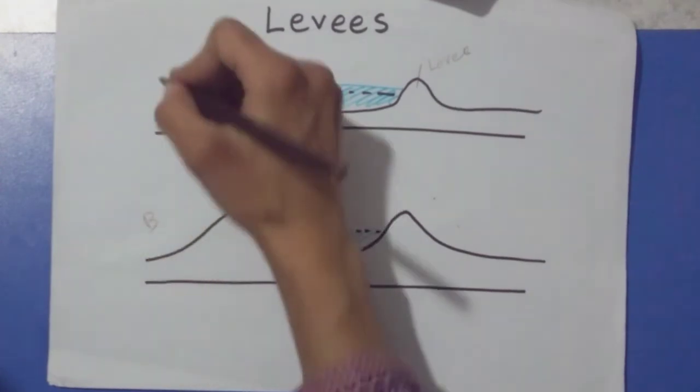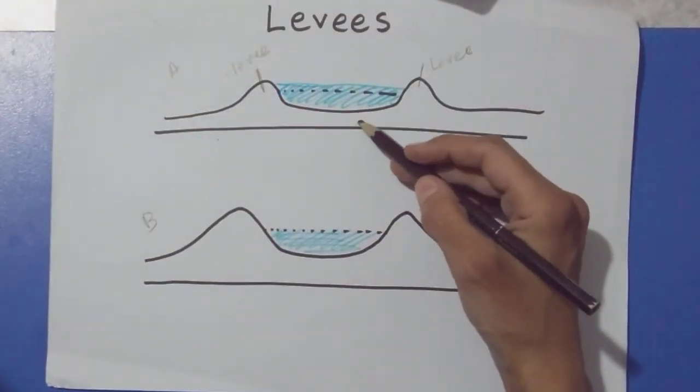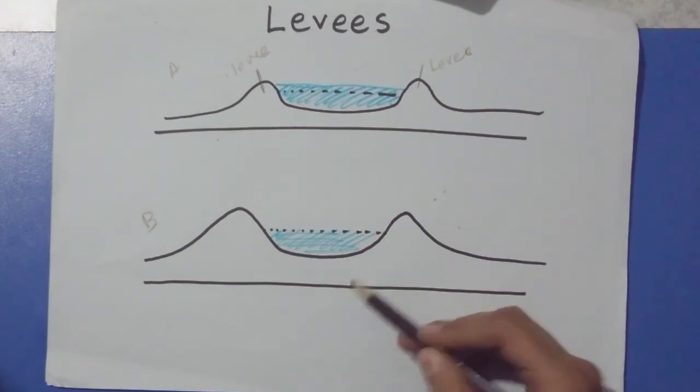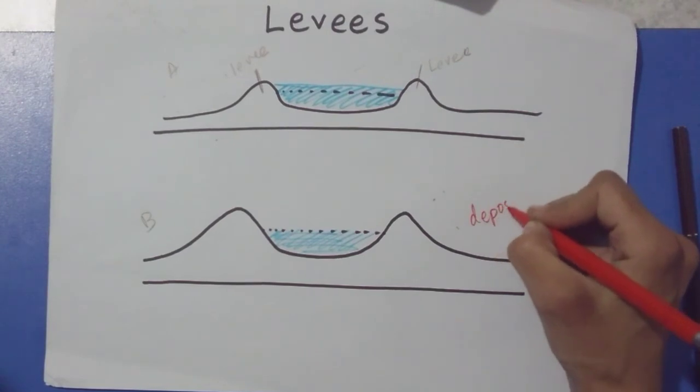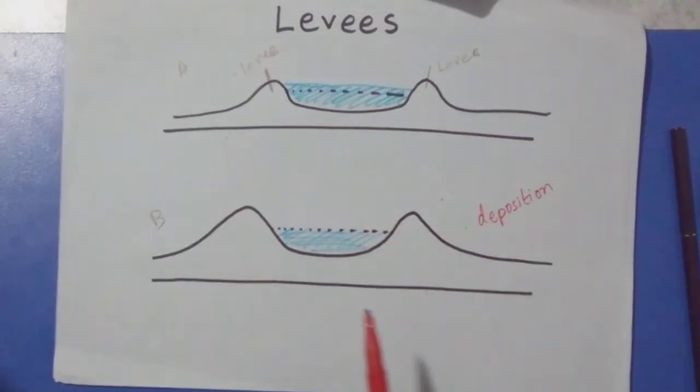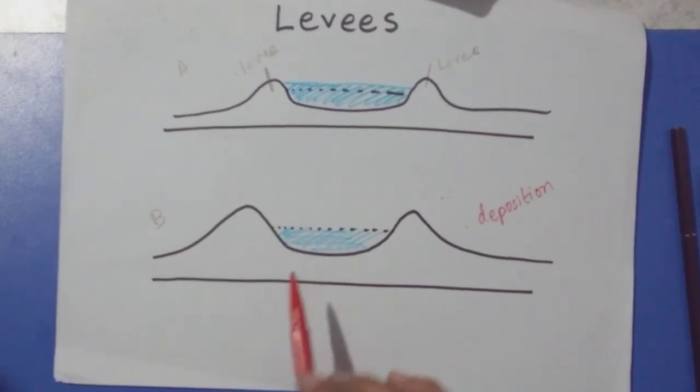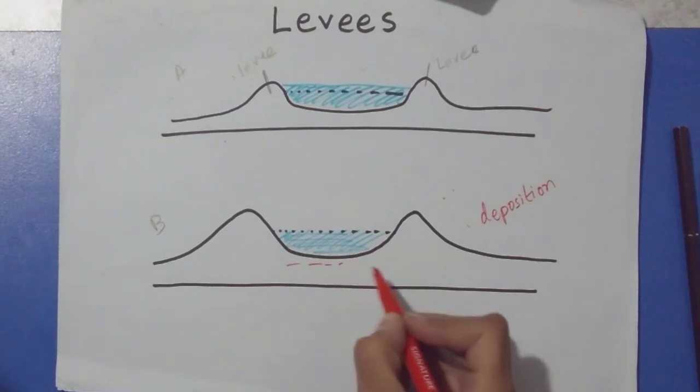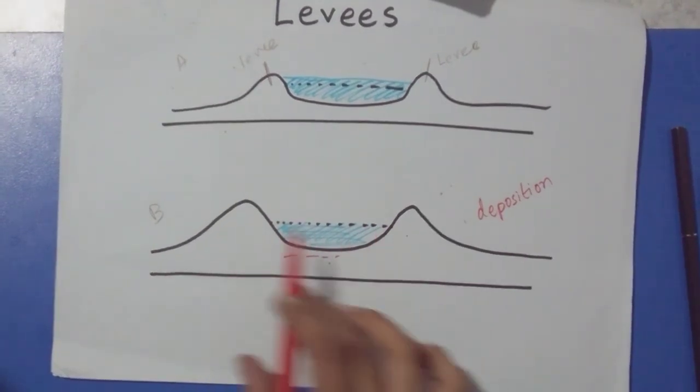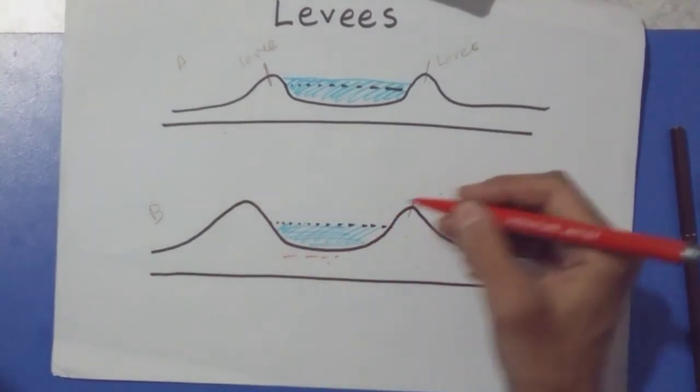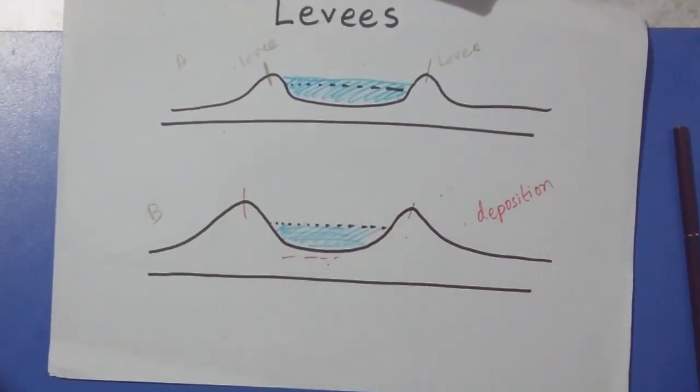If you see this diagram here, you will see that the river bed has risen in figure B, whereas in A it was not as raised. Why has it raised? It's because of the main activity of the river, which is deposition. Levees are formed because of deposition. The river is carrying a lot of load and starts to deposit it not only on the river bed but also on the sides of the river. These sides get raised, and these ridge-like structures are called levees.